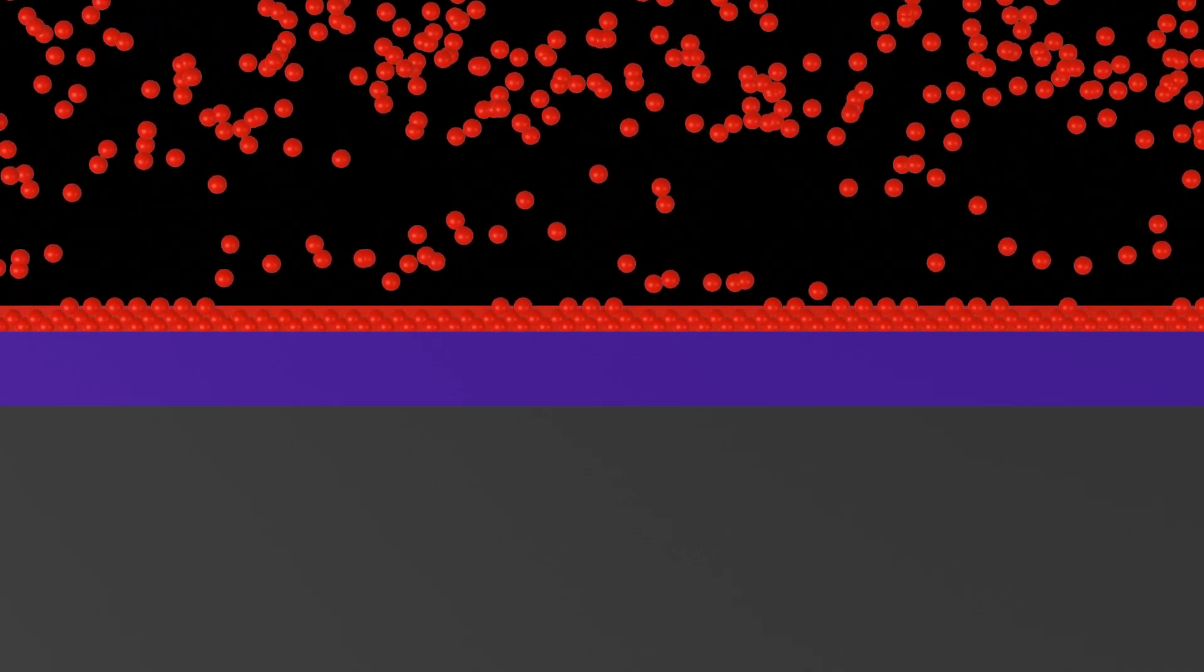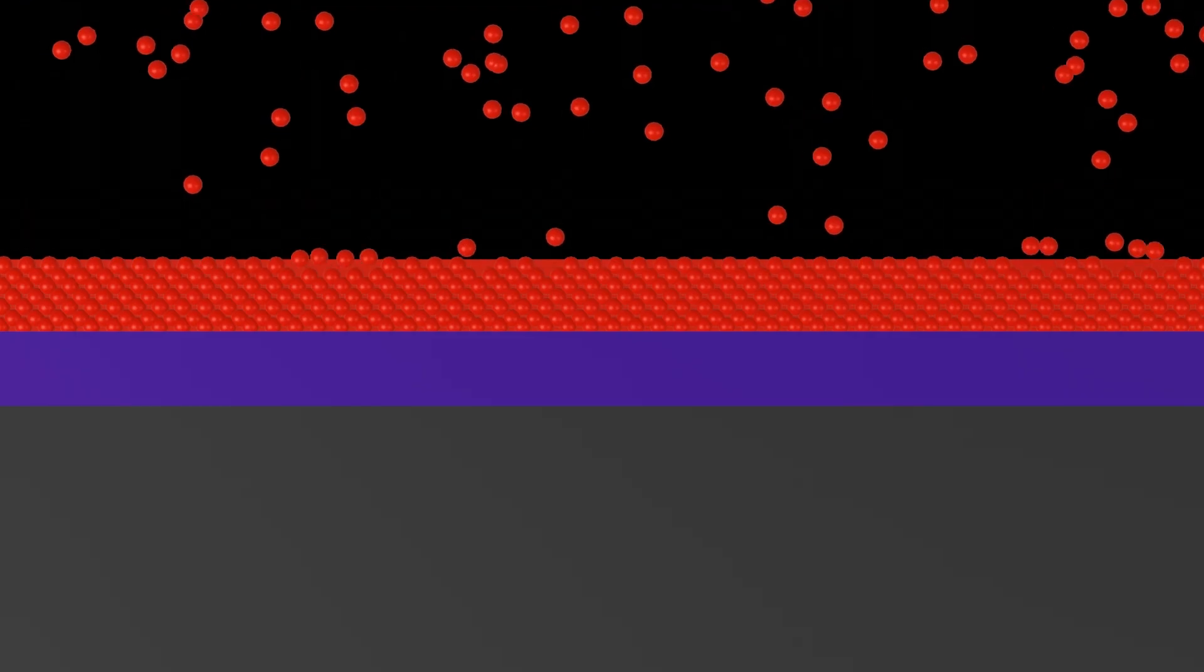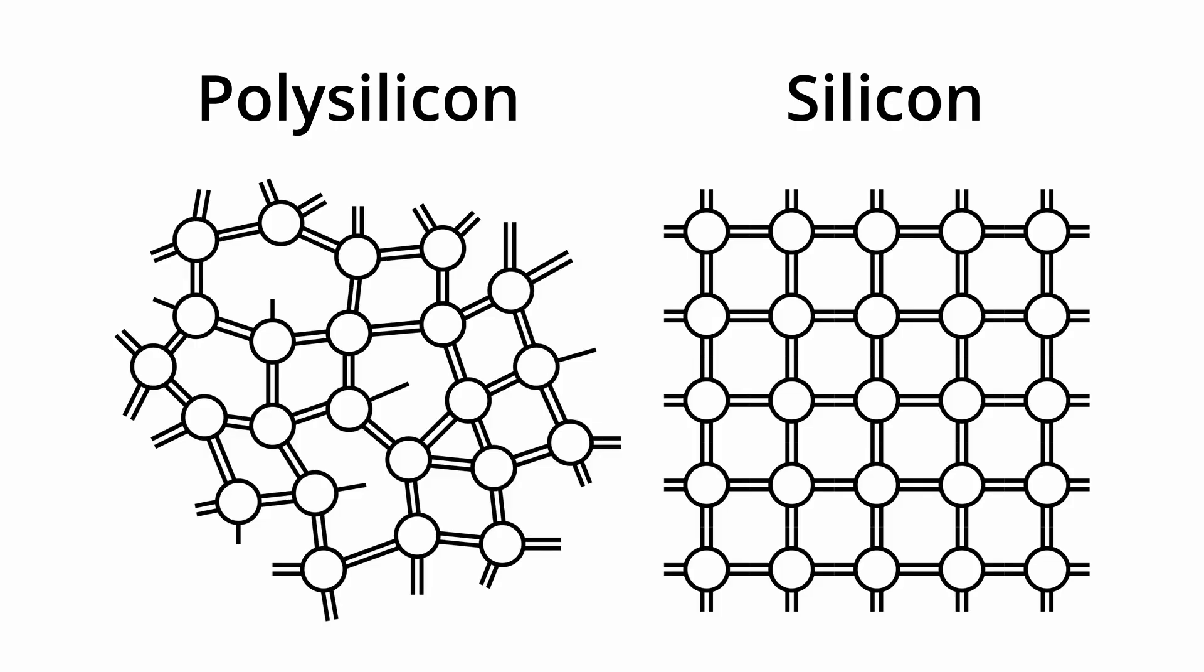Next, we use a process called chemical vapor deposition, or CVD, to build up a layer of polycrystalline silicon on top of the oxide layer. Polycrystalline silicon, or polysilicon for short, is silicon, but without the perfect crystal structure of the wafer. In other words, polysilicon is the wafers unemployed brother, and I will stick to that definition until someone comes to give me a better one.